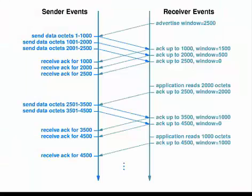How does TCP/IP sliding work? First of all, the receiver will advertise its window size. In the given example, it has a window size of 2500 bytes. The sender will send multiple octets — it has sent 1000 octets.